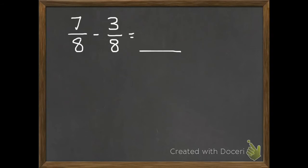Today we will be subtracting also, so make sure you look really carefully at whether you are adding or subtracting. This time we're subtracting. So if I have 7 eighths and I get rid of 3 of those eighths, how many eighths will I have left? 7 subtract 3 is 4, so we have 4 eighths. But we're not done — we need to put it in simplest form.